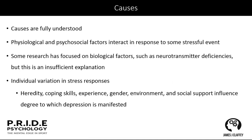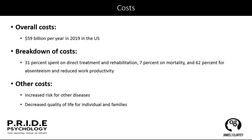Some of the causes of depression are not fully understood. Physiological and psychological factors interact in response to stressful events. Some research has focused on biological factors such as neurotransmitter deficiencies, but this is an insufficient explanation. Individual variation in stress responses — hereditary factors, coping skills, experience, gender, environment, and social support — all influence the degree to which depression manifests. The cost in the US was $59 billion per year in 2019: 31% on direct treatment and rehabilitation, 7% on mortality, and 62% on absenteeism and reduction of work and productivity.